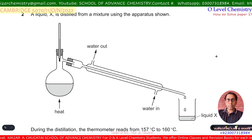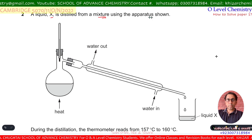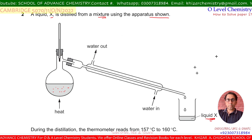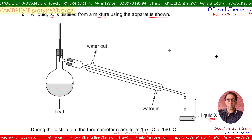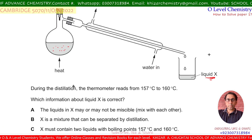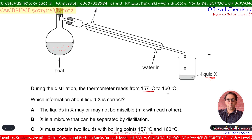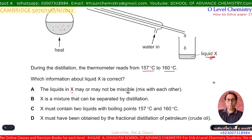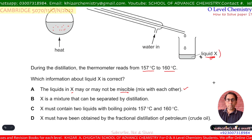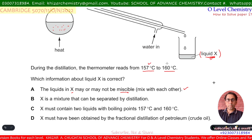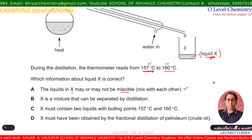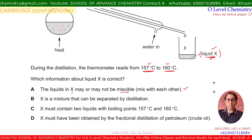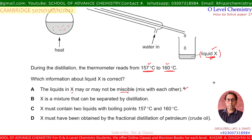Question number 2. A liquid X is distilled from a mixture using simple distillation apparatus. During this distillation, the thermometer reads 157°C to 160°C. Since the thermometer reads a range from 157°C to 160°C, it means X is a mixture. It may contain miscible or immiscible liquids. So A is the correct option.